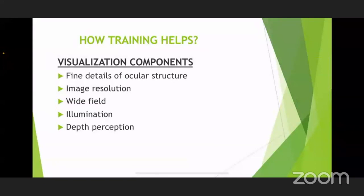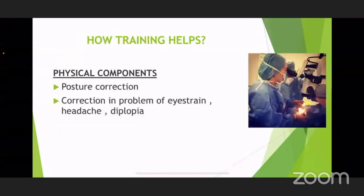How does training help? It helps in visualization — you are able to see ocular structures better, with better image realization, a wider field, illumination under your control, and improved depth perception. Physically, you also learn how to keep your posture without causing unnecessary ergonomic strains. You also learn to adapt to eye strain, headache, and diplopia — all those things — once you are trained for microscope use in wet labs, dry labs, or simulated labs.